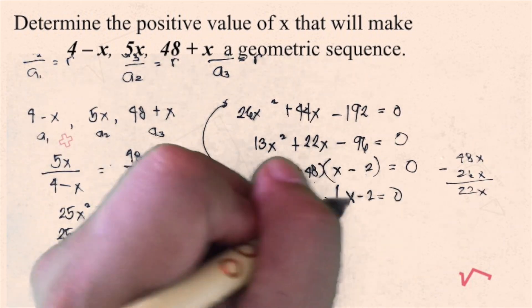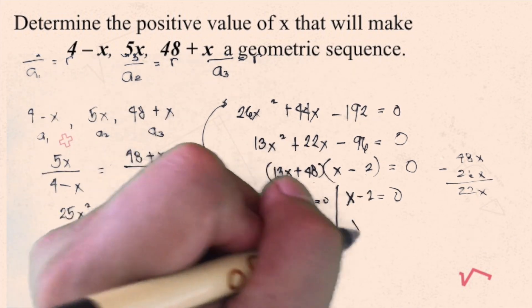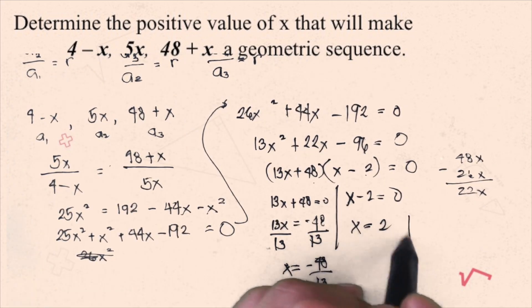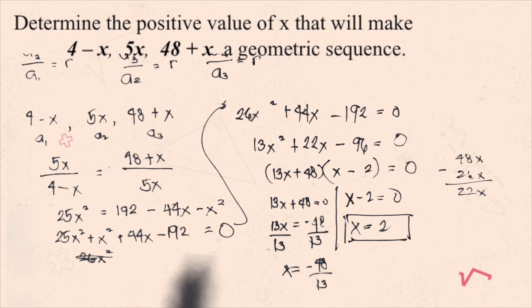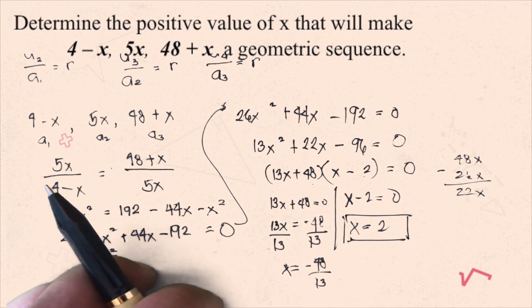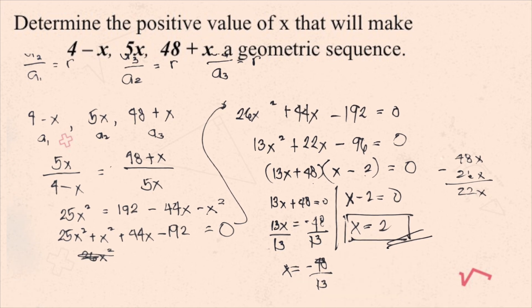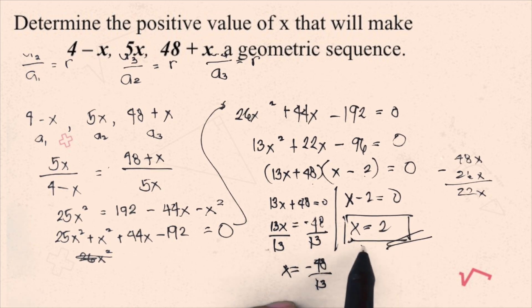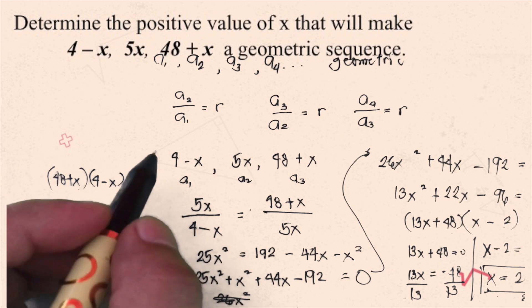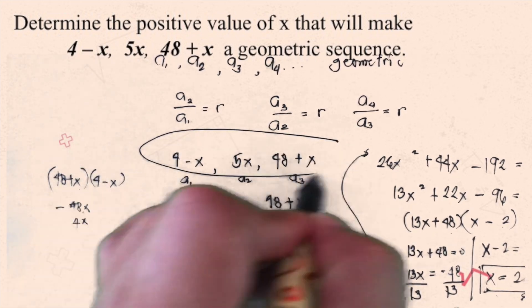So, x is equal to negative 48 over 13. With this, the other one, x minus 2 equals 0, so x equals positive 2. Since we're looking for only the positive value of x, the answer is 2.